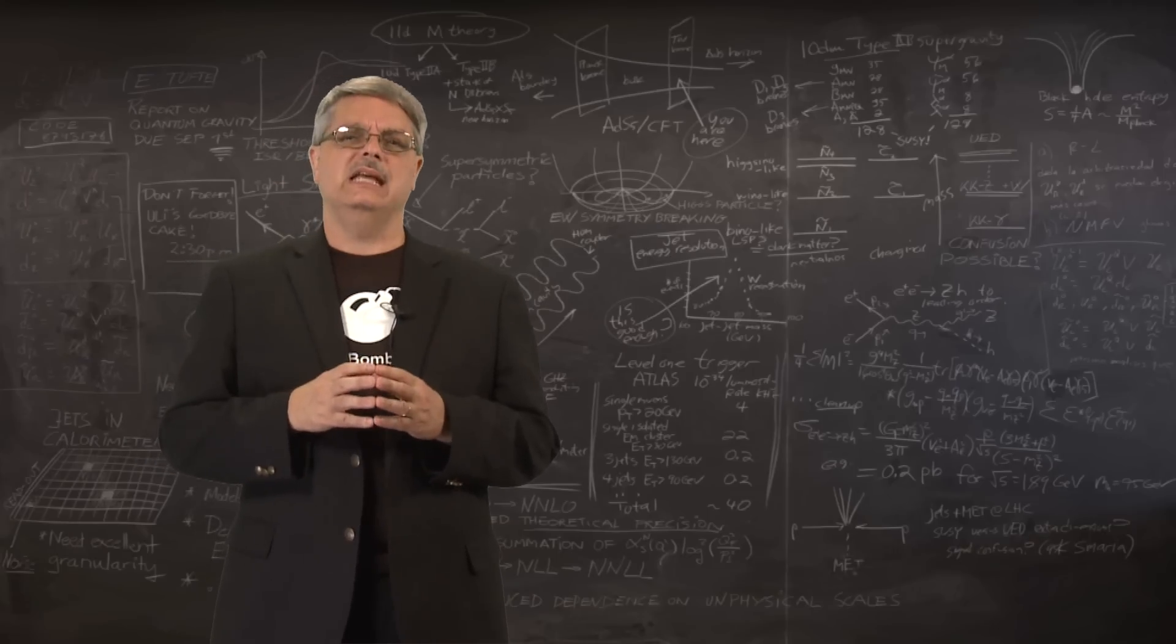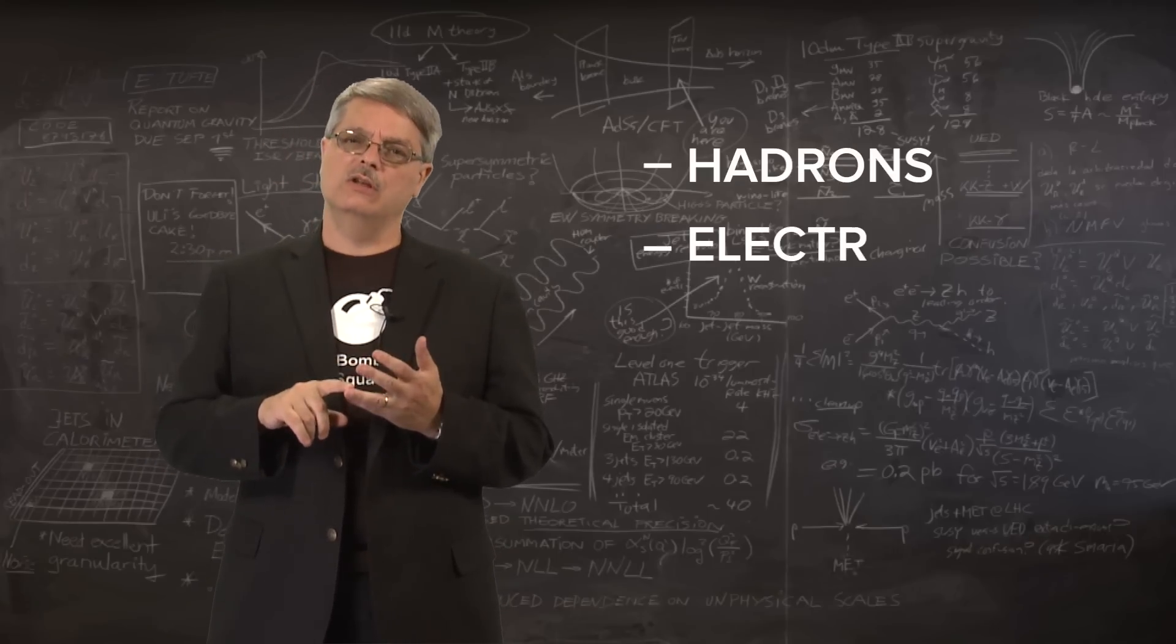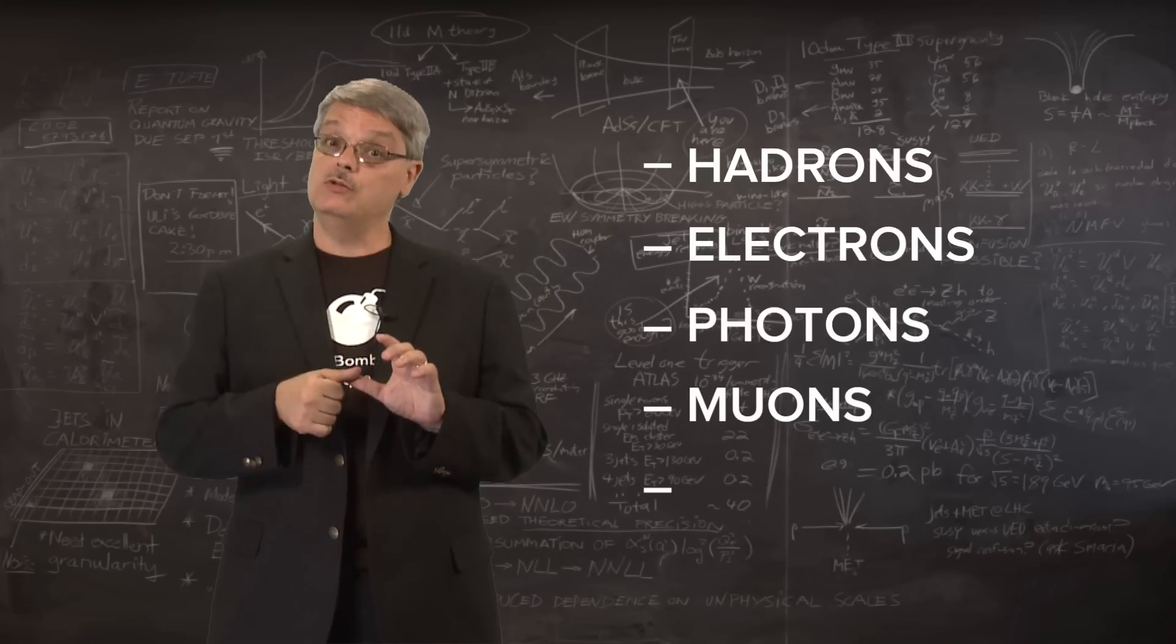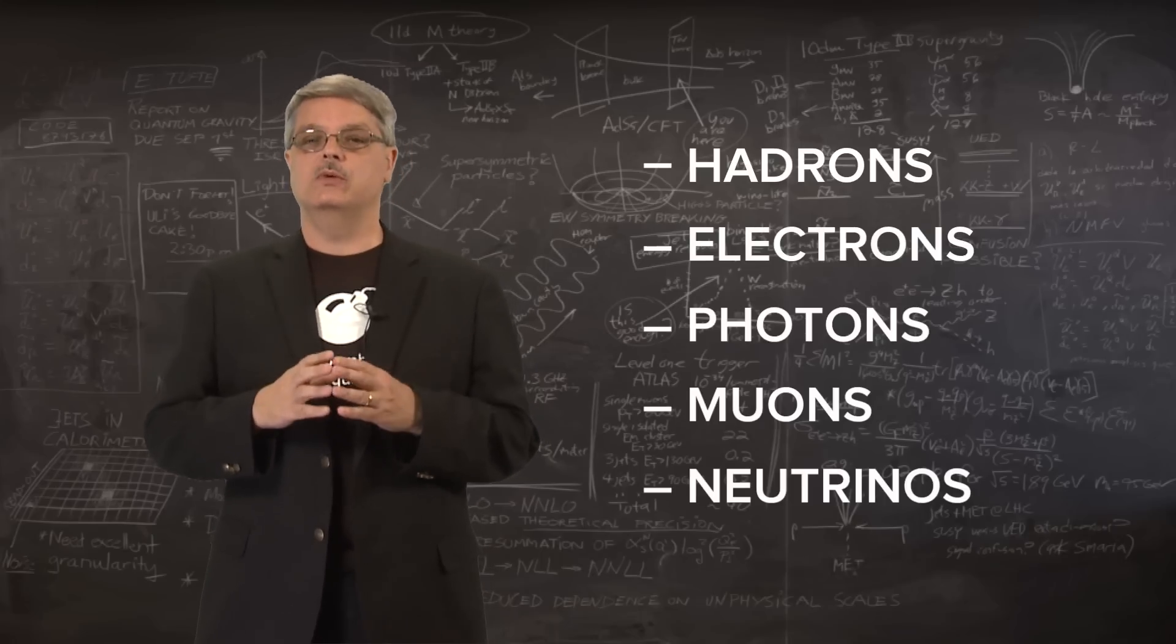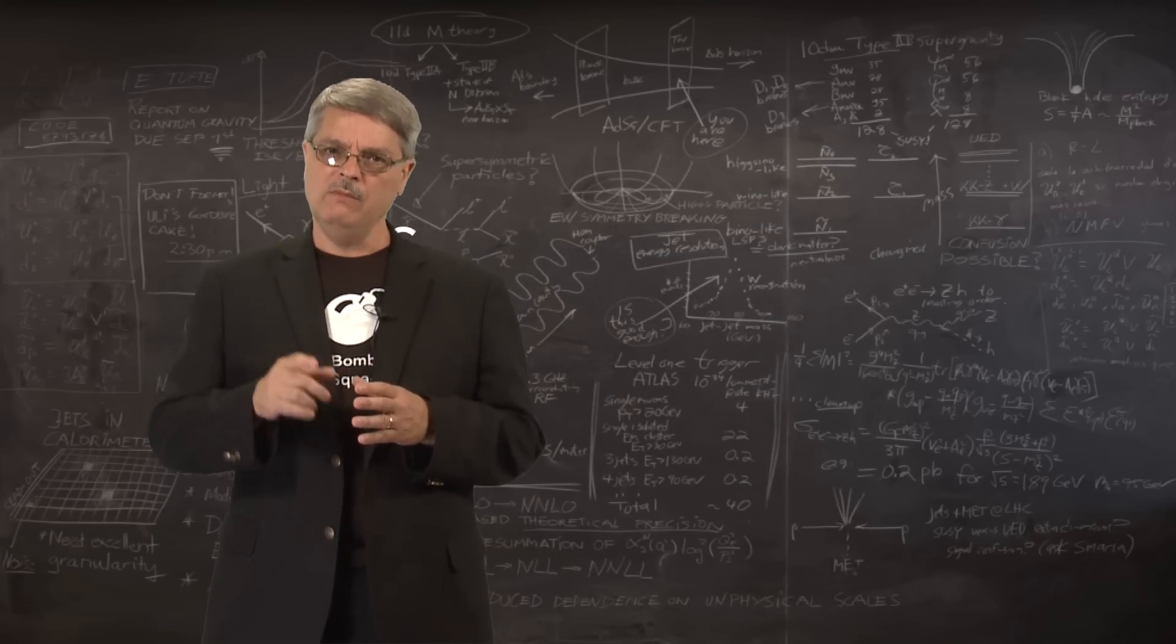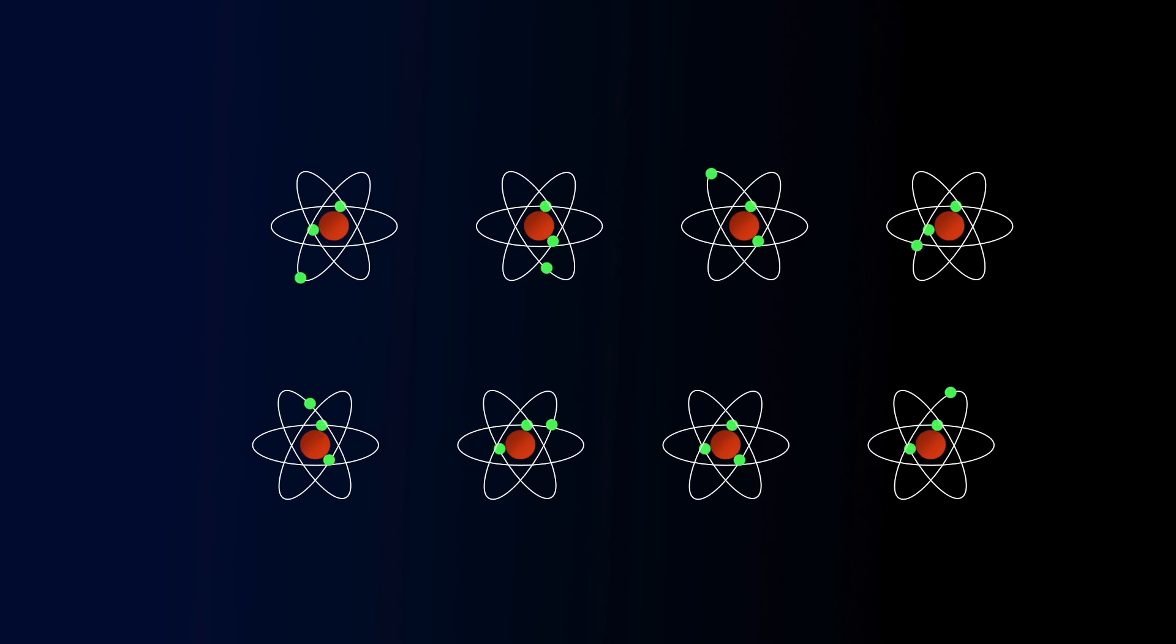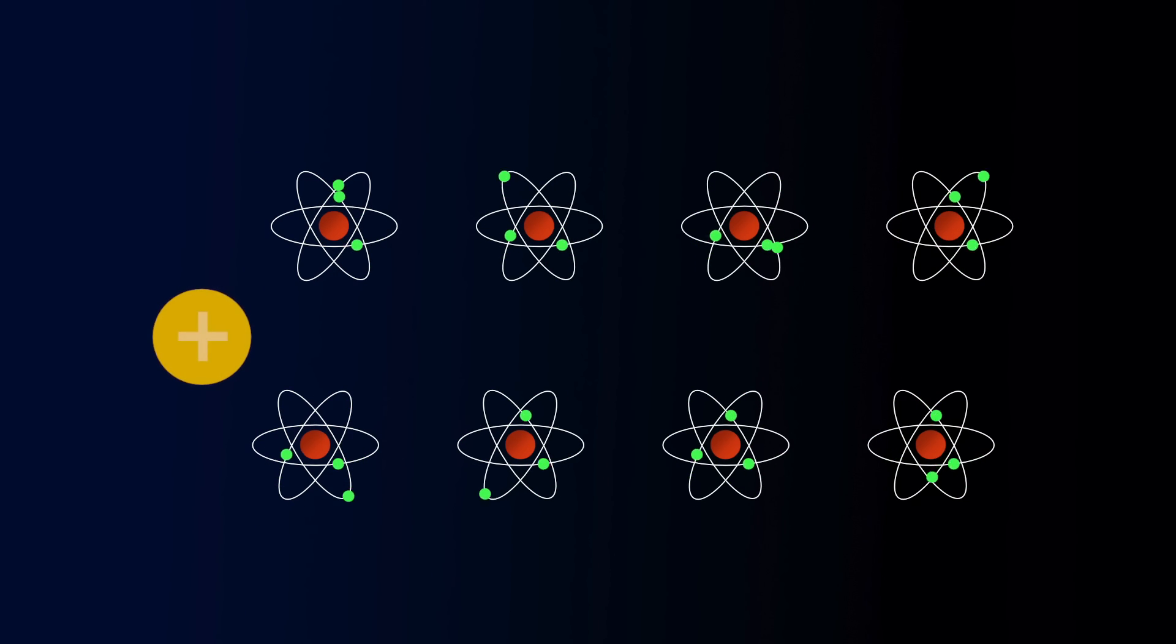These particles have many names, like hadrons, electrons, photons, muons, and neutrinos. Each of these interact differently with matter. For instance, electrons, muons, and some hadrons have an electrical charge.